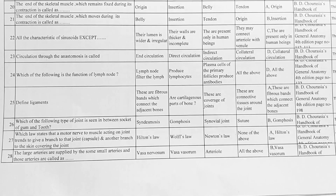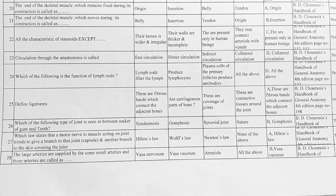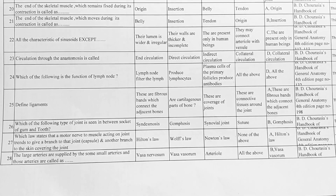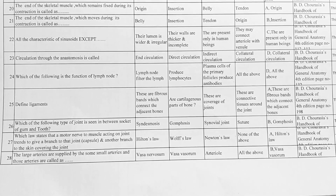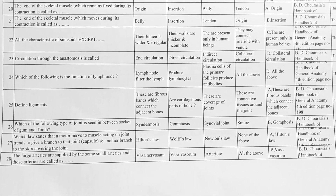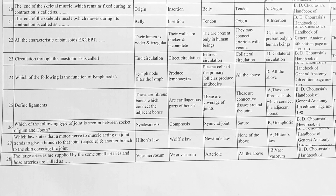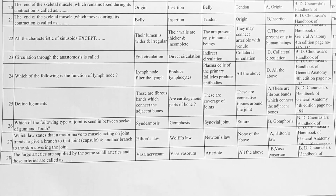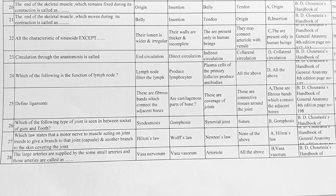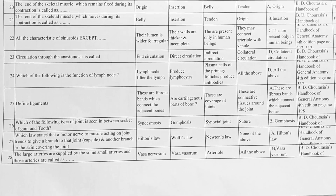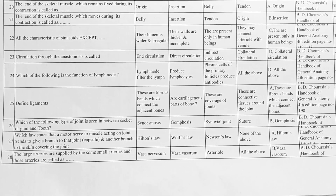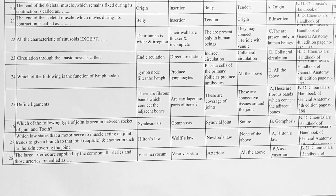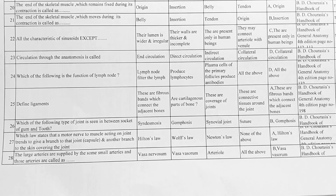Next, define ligaments. Options: A. these are fibrous bands which connect the adjacent bone or cartilaginous part of bone, B. these are coverage of joints, C. these are connective tissue around the joint. Answer, option A is correct — these are fibrous bands which connect the adjacent bones.